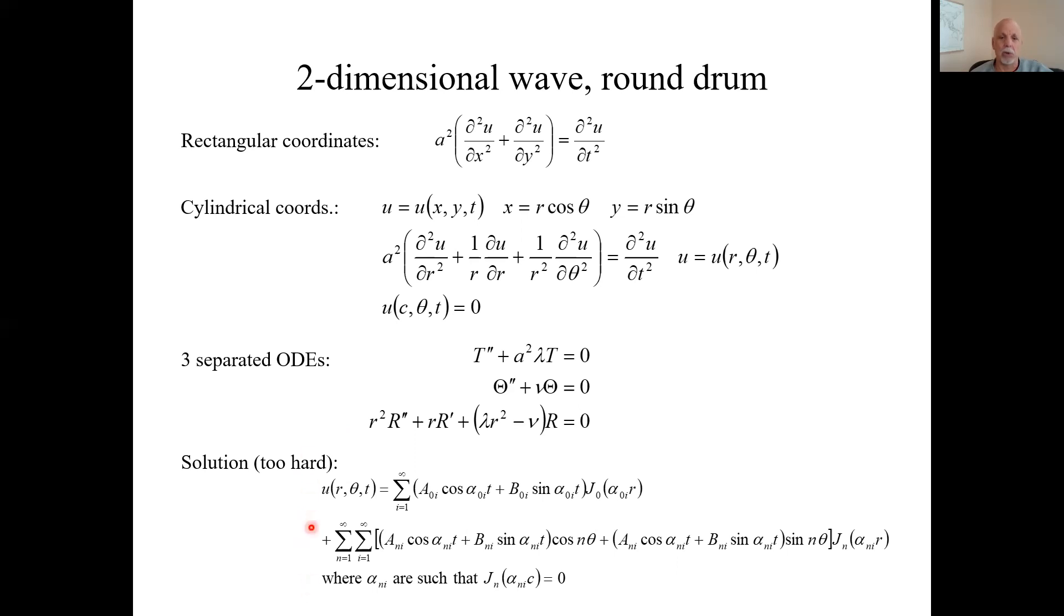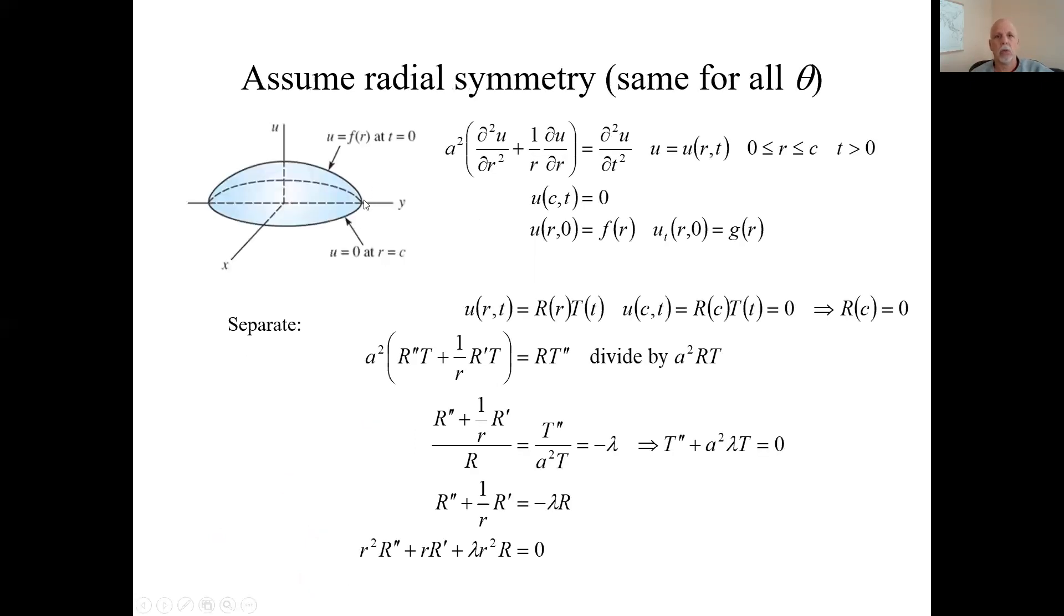We end up with three ordinary differential equations. And without going through it, here's the solution to those three guys in general. I'm not going to go through this. This is too hard. What we're going to do is a two-dimensional version of this problem by assuming radial symmetry. That means it's the same height for any theta.